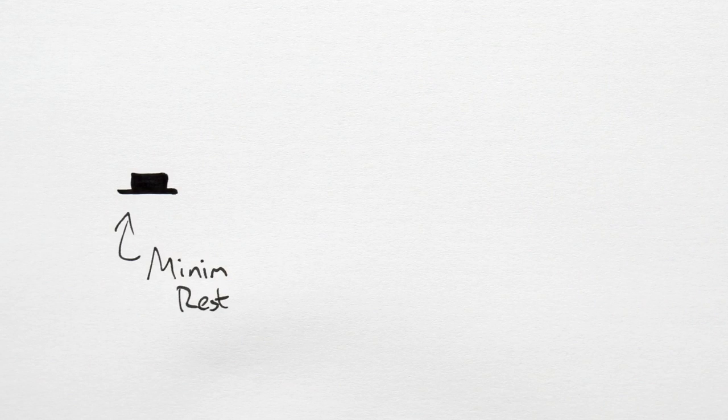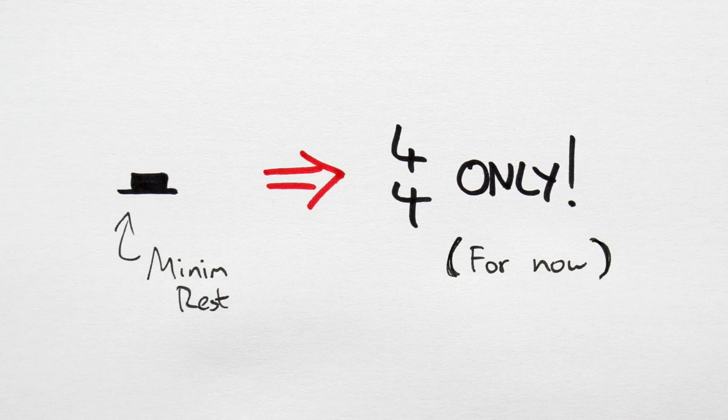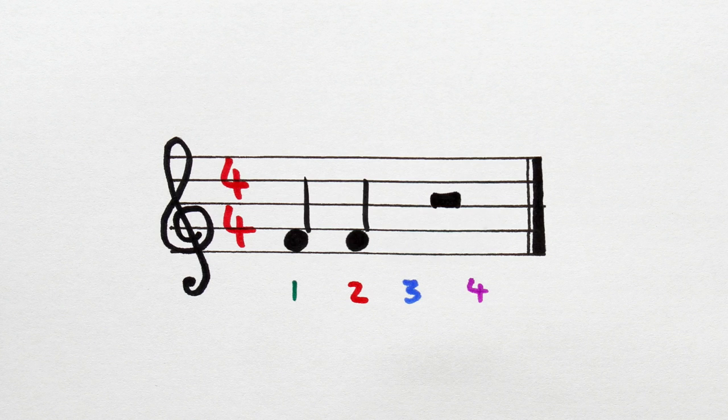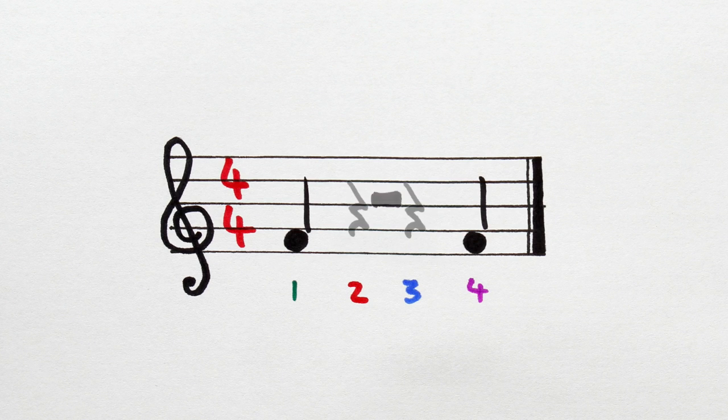Now, the minim rest, for the moment, will only be used in 4-4 time. It can be used for beats 1 and 2, and beats 3 and 4. But not on beats 2 and 3. Here, we have to use two crotchet rests.